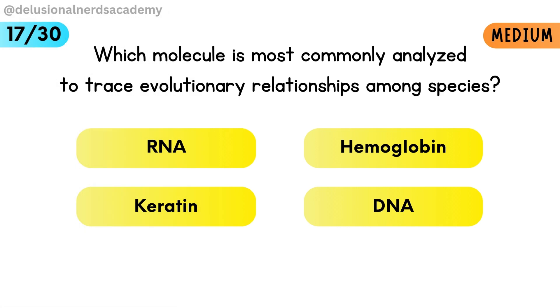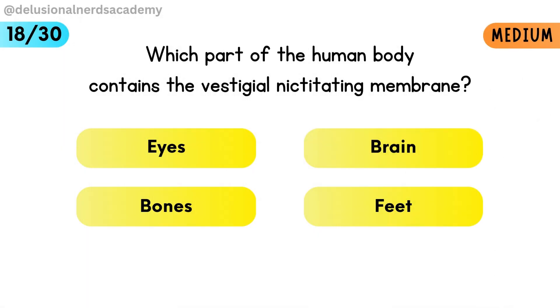Which molecule is most commonly analyzed to trace evolutionary relationships among species? DNA is the most used molecule to trace evolutionary relationships. Which part of the human body contains the vestigial nictitating membrane? The human eye has a vestigial nictitating membrane.